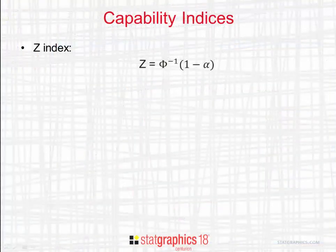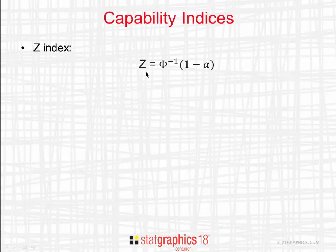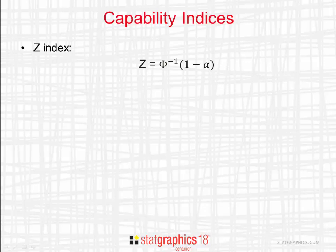We can also calculate the value of popular capability indices when a Johnson distribution is used. One popular index is called z. In the case of a normal distribution, z is the number of standard deviations from the mean to the nearer specification limit. That has no meaning in the case of a Johnson distribution. However, if we work backwards by setting z equal to the inverse cumulative standard normal distribution at 1 minus alpha, we can maintain the same relationship between z and the proportion of non-conforming items for the Johnson distribution as would apply for the normal distribution. We call these equivalent capability indices.